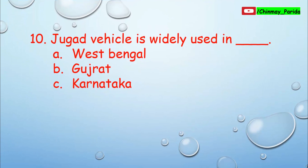Question number 10. Jugaad vehicle is widely used in which state? Option A: West Bengal, option B: Gujarat, option C: Karnataka. It is widely used in the state of Gujarat. Option B, Gujarat, is the correct answer.